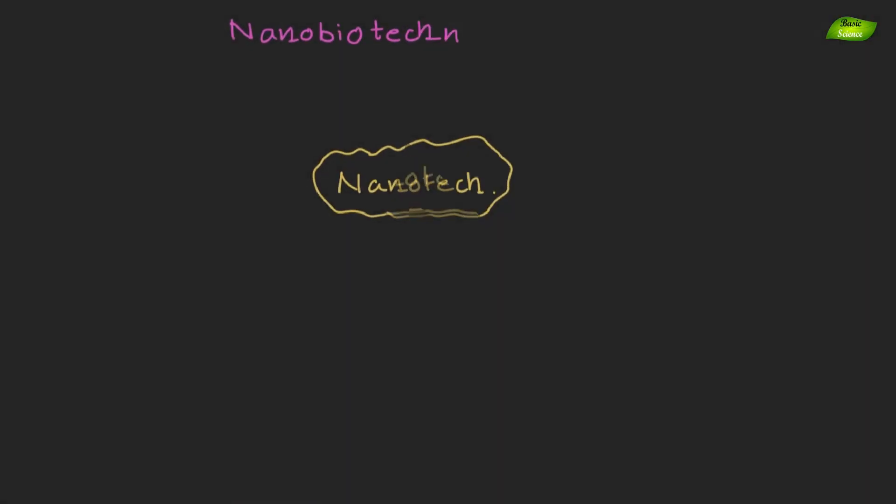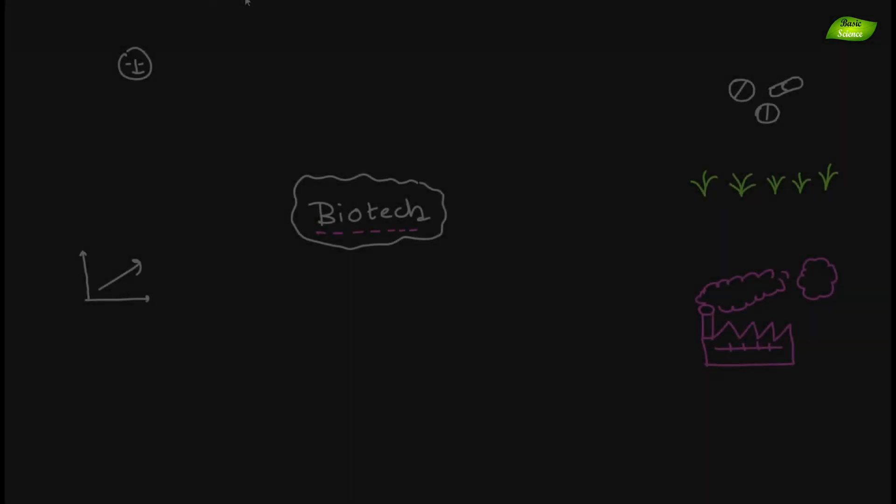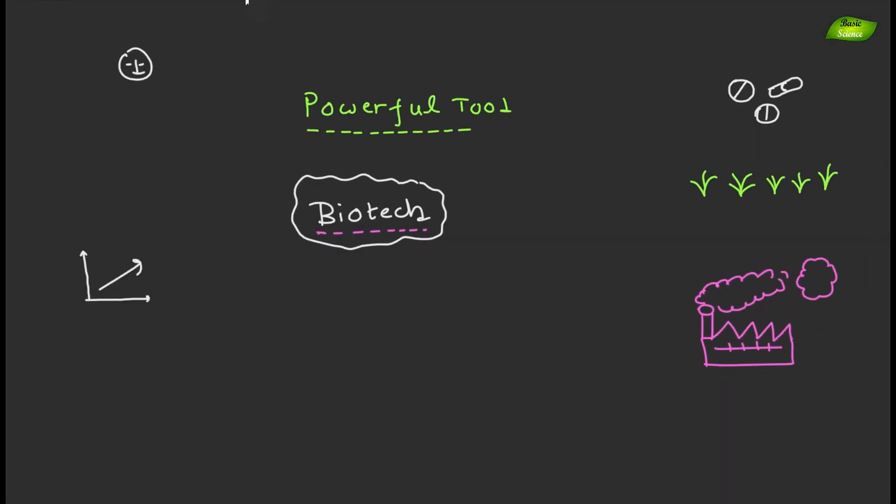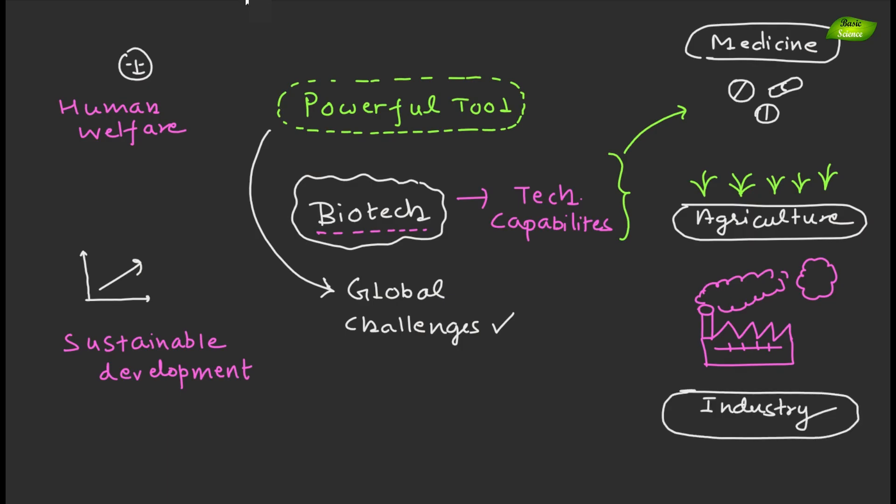Nanobiotechnology, for instance, explores the interface between nanotechnology and biotechnology to develop novel materials, devices and therapies at the nanoscale. Biotechnology represents a powerful tool for addressing global challenges, improving human welfare and driving sustainable development. As scientific knowledge and technological capabilities continue to advance, the potential of biotechnology to shape the future of medicine, agriculture, industry and the environment remains vast and promising.